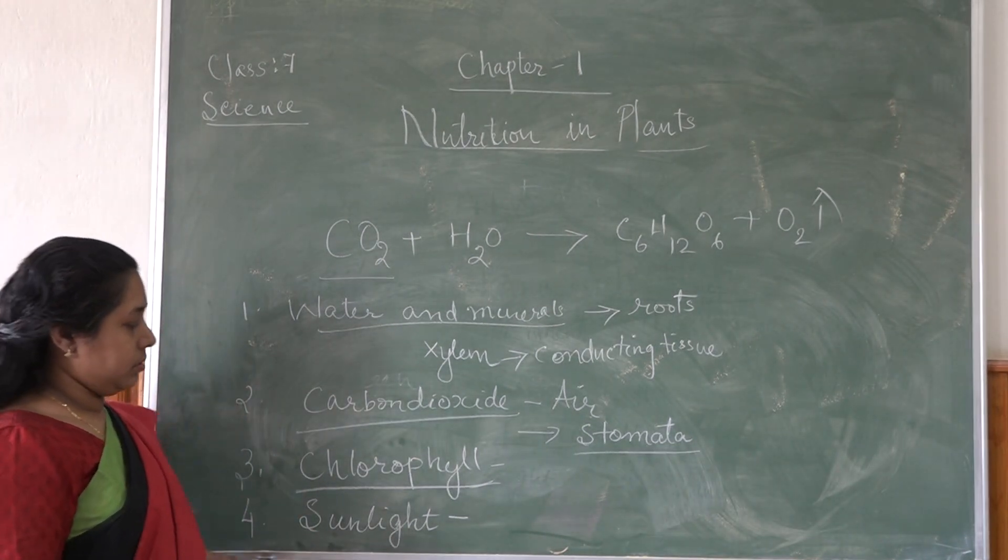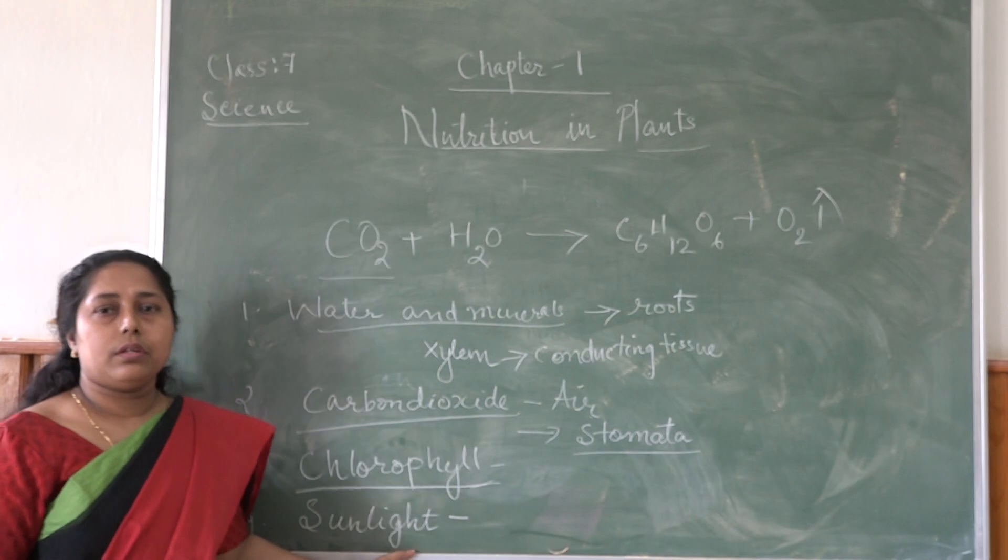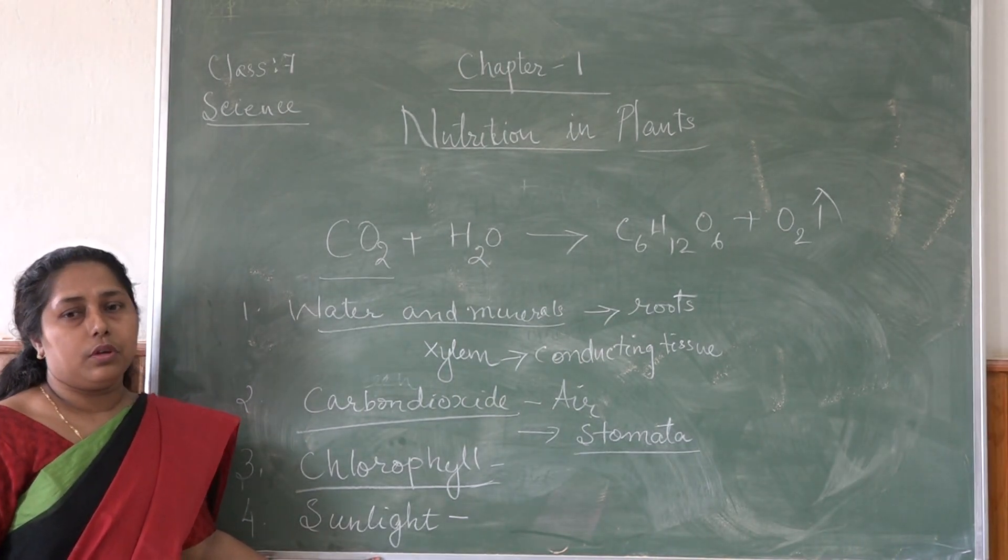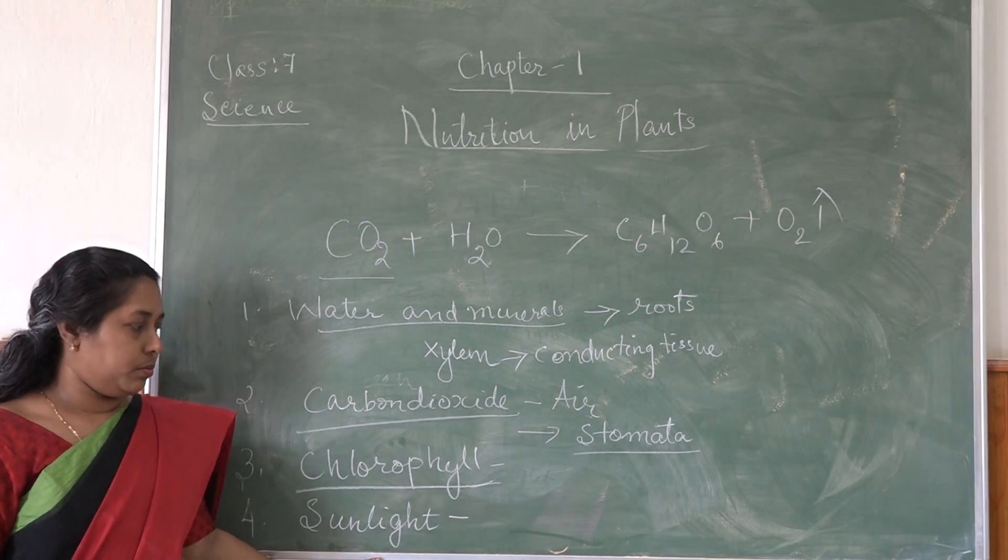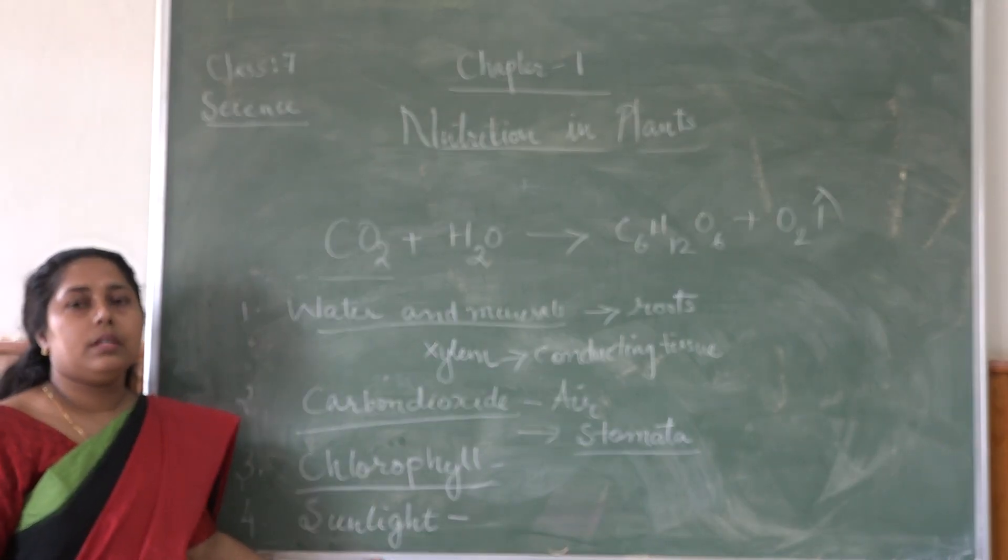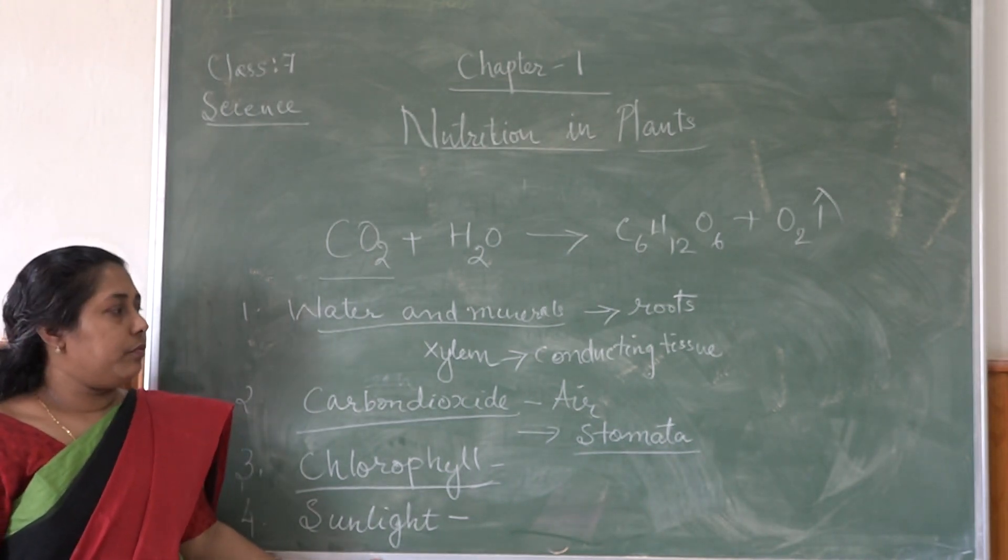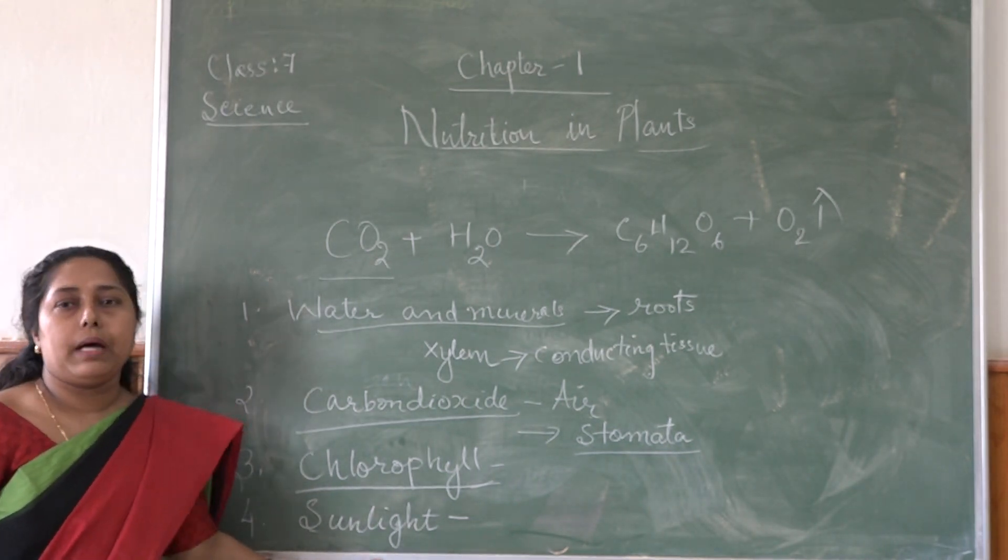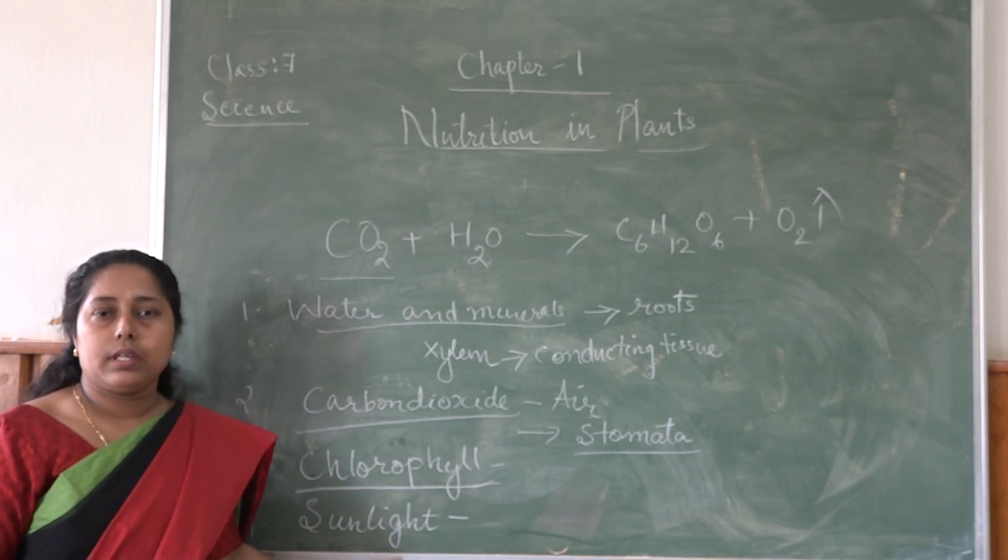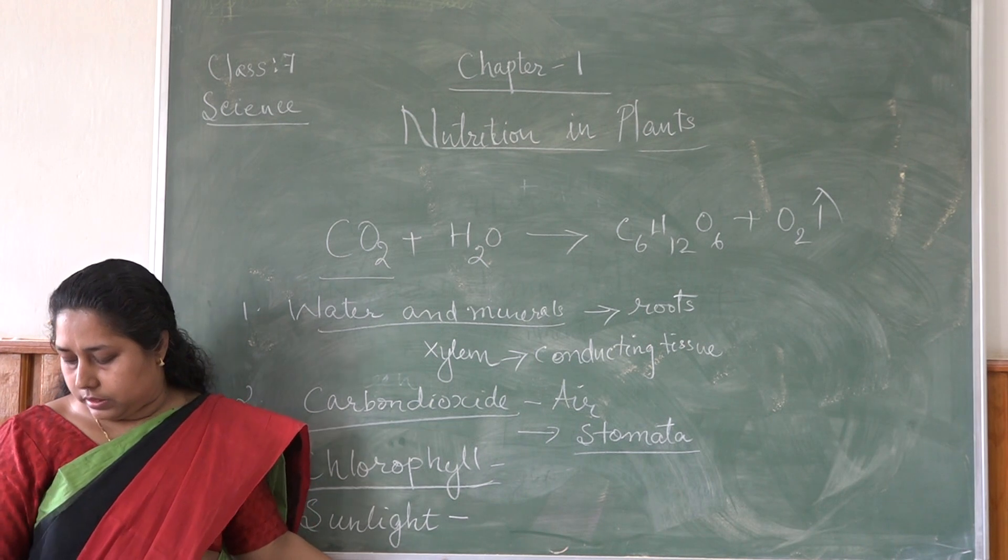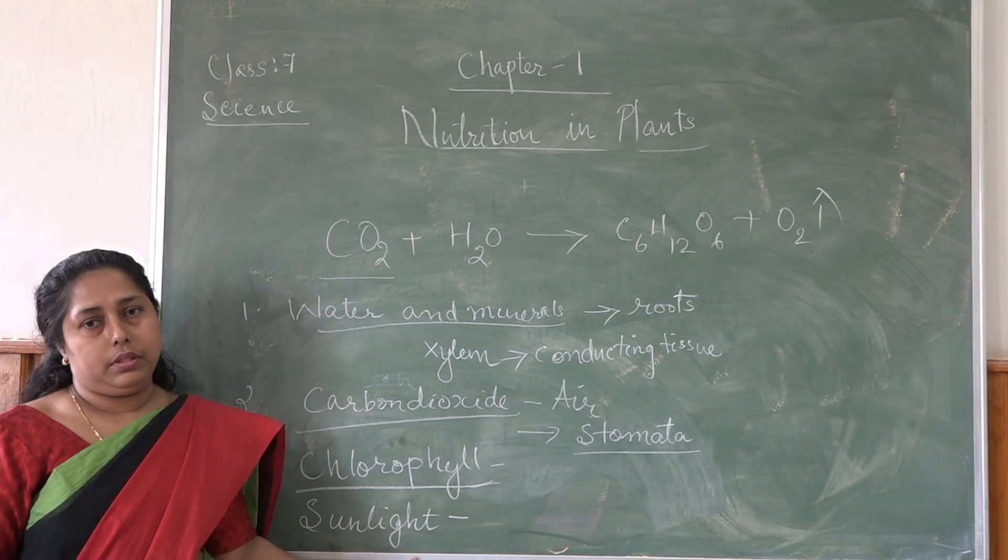The importance of photosynthesis is, first, this is the ultimate source of food for all living organisms. Photosynthesis helps to provide food for all living organisms. Then photosynthesis maintains the balance between oxygen and carbon dioxide in the environment, and it also provides oxygen for breathing.